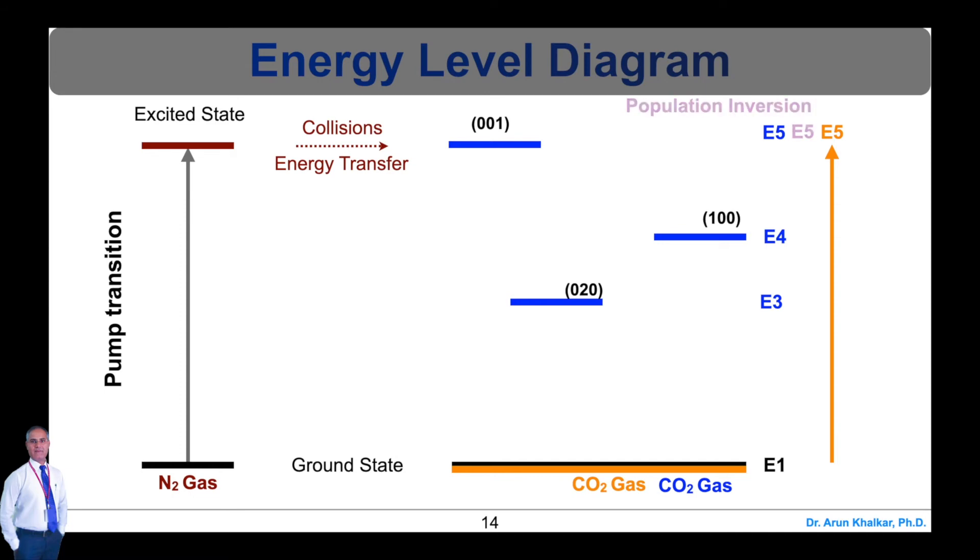Random photons are emitted spontaneously by a few atoms at the energy level E5. The spontaneous photons traveling through the gas mixture prompt stimulated emission of photons.